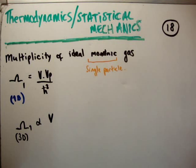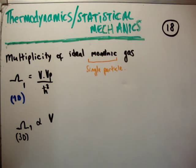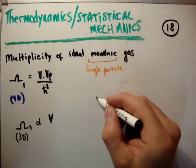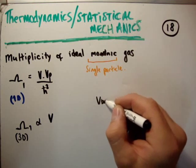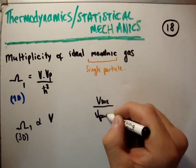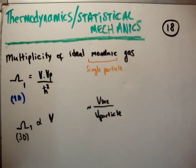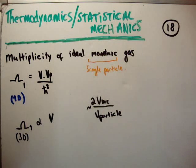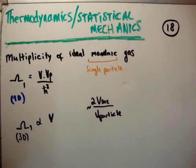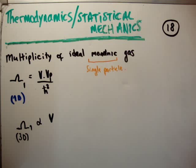Think about it: if you have one molecule and you put it in a box and close the box, it has a certain number of states — in other words, it would be the volume of your box divided by the volume of your particle. That's approximately the number of position states available, and if you double the size of your box, you're going to double the number of possible states. So we're going to say that the multiplicity is proportional to the volume in which your particle is inside in position space.